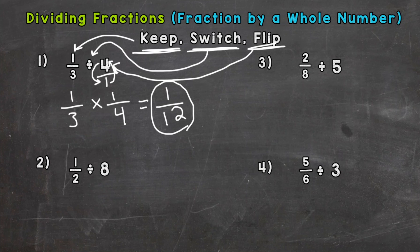So let's take a look at number two. One-half divided by eight. So we keep, switch, and then we need to flip eight over one, so it's actually one-eighth. Now we can go straight across. One times one is one. Two times eight is sixteen. The greatest common factor between one and sixteen is one. So we are simplified and done. One-sixteenth.